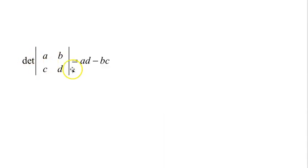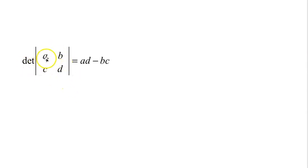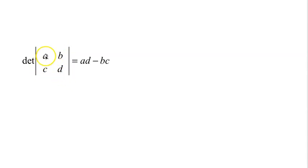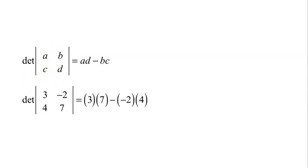If we have a 2 by 2 matrix — two rows, two columns — the determinant of that matrix defined by A, B, C, D is A times D minus B times C. Multiply one way, minus multiply the other way.